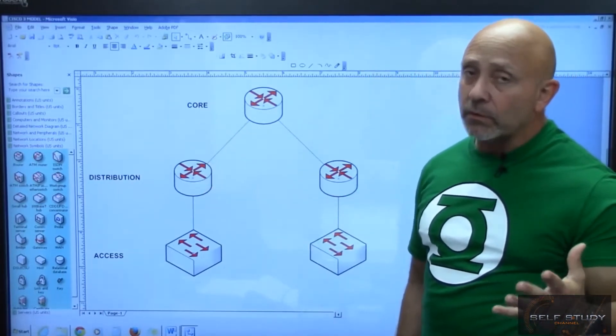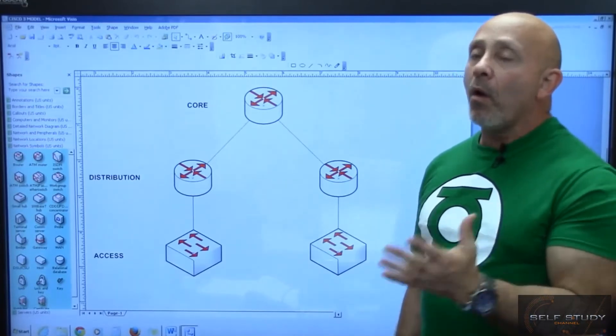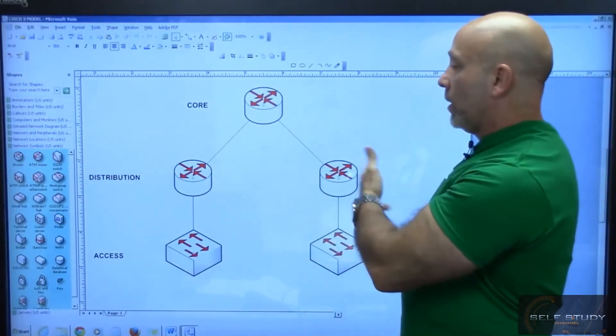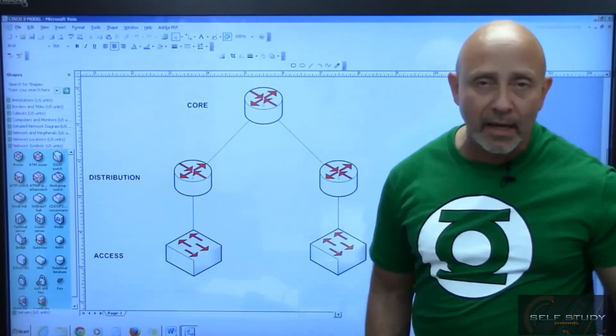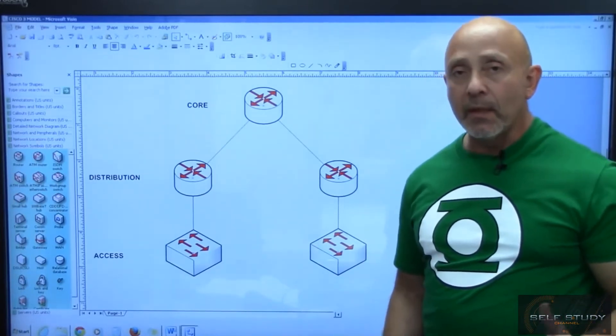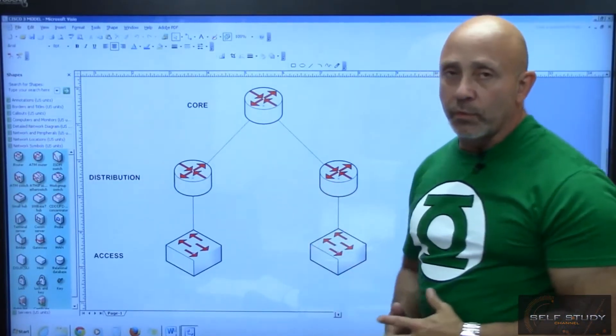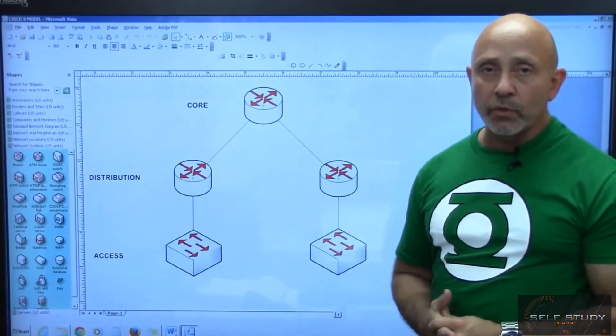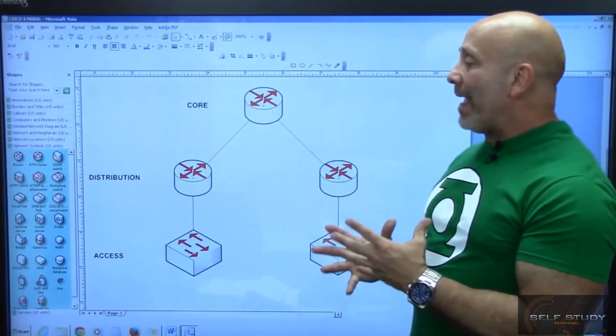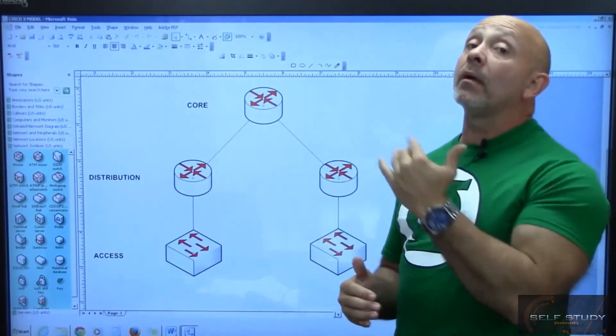This is going to be doing a lot of the routing decisions—whether it's necessary to go to the core router, or can I just route it to the other router next door, or is it going back down, or whatever the case may be. That is your distribution layer.